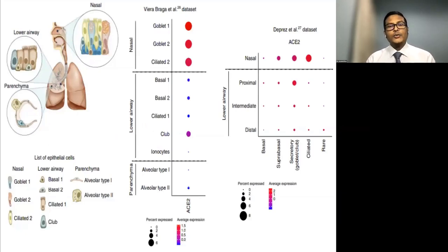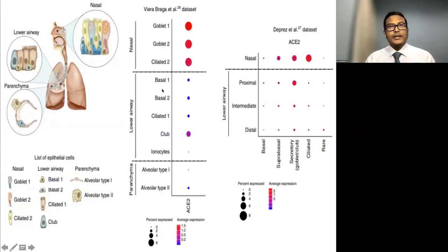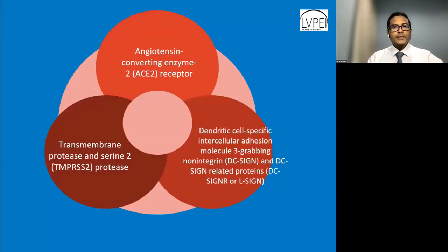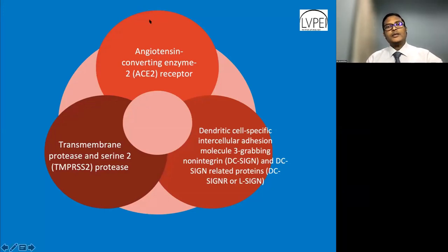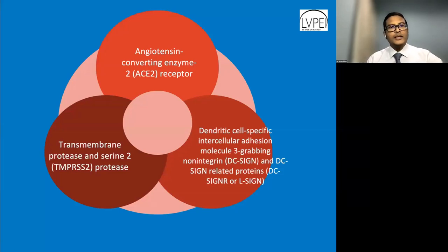As shown in this cartoon, the nasal lower and upper airway have variable expression of the serum ACE-2, responsible for the lungs as the primary pathway through which this virus enters the body. Only these two receptors are key to internalization of the virus, but there are other receptors also coming into form, including the DC-SIGN and DC-SIGN-related proteins.